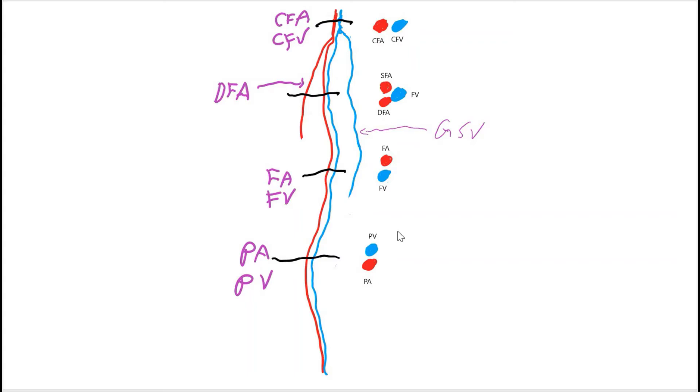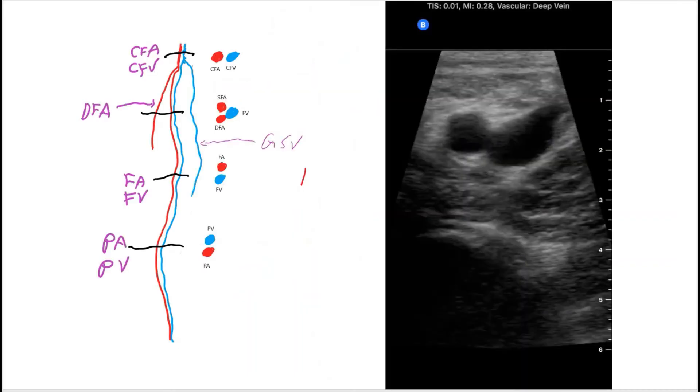And when scanning for the popliteal vein and the popliteal artery, you're scanning from behind the knee. Here's a drawing of the lower extremity. Here's the inguinal area. When you are scanning you start up here where the inguinal area is and you scan down towards the medial side and downwards. And here you have the indicator pointed to the patient's right side.